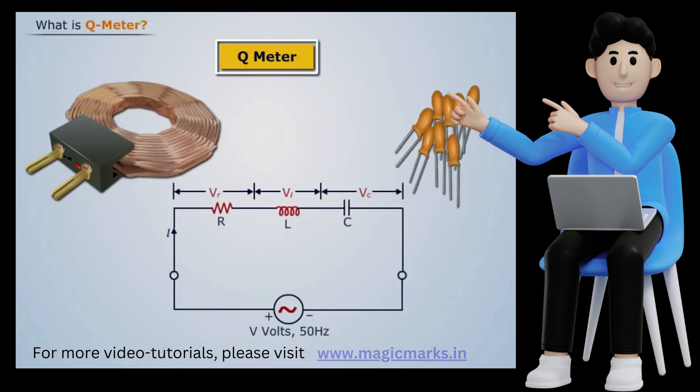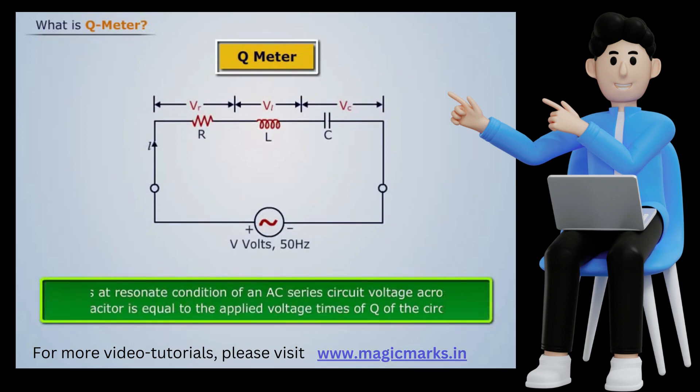This instrument operates on the principle of series resonance. That is, at resonant condition of an AC series circuit, voltage across the capacitor is equal to the applied voltage times Q of the circuit. If the voltage applied across the circuit is kept constant, then a voltmeter connected across the capacitor can be calibrated to indicate Q directly.